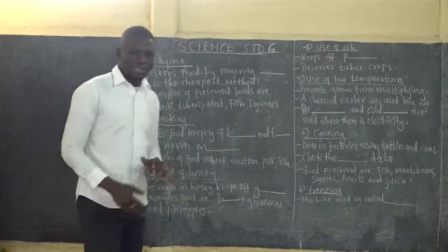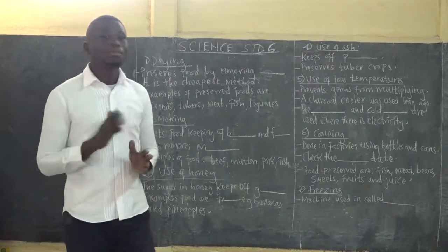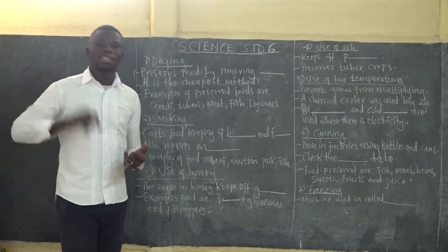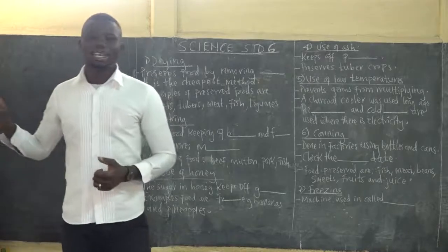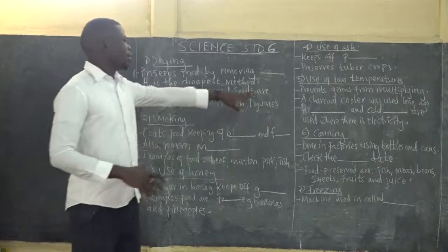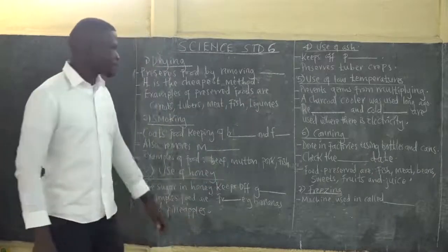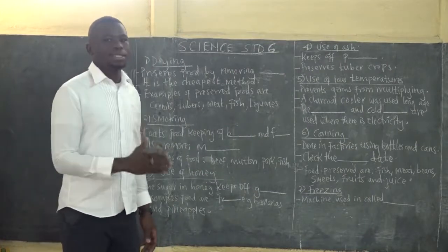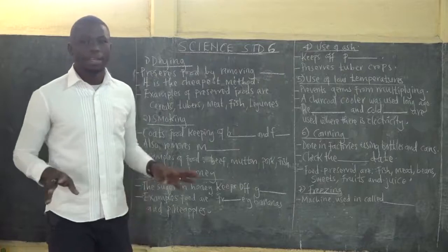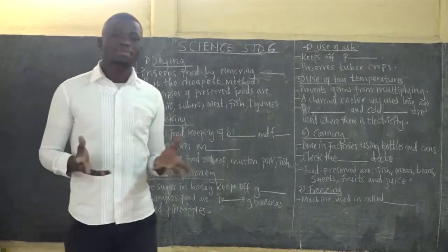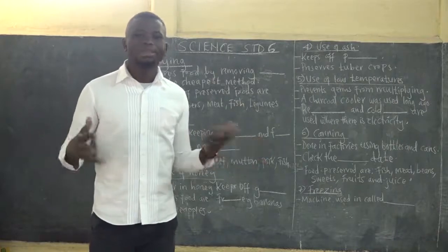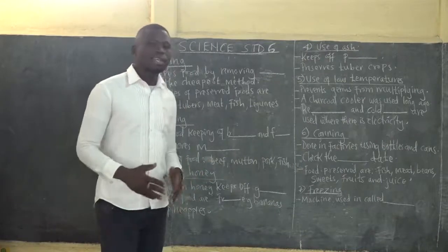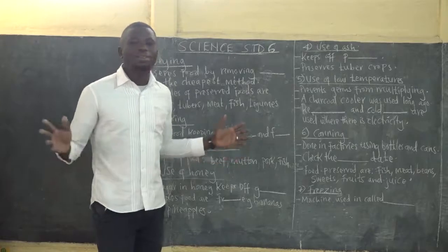Use of low temperatures. This is both a traditional and a modern method, same as drying — used long ago and still used today. Low temperatures prevent bacteria and fungi from multiplying. When bacteria are exposed to low temperatures, they become inactive; they cannot multiply or increase, so they end up causing no harm to the food.